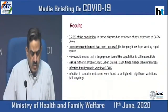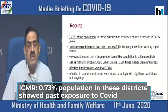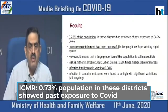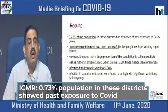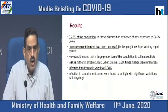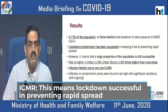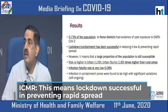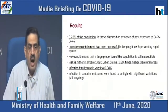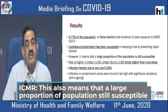The results showed that about 0.73% of the population in these districts had a past exposure to SARS-CoV-2 infection. This means that the lockdown and containment measures have been successful in keeping it low and preventing rapid spread of this disease over the last three months. However, it means that a large proportion of the population is still susceptible.